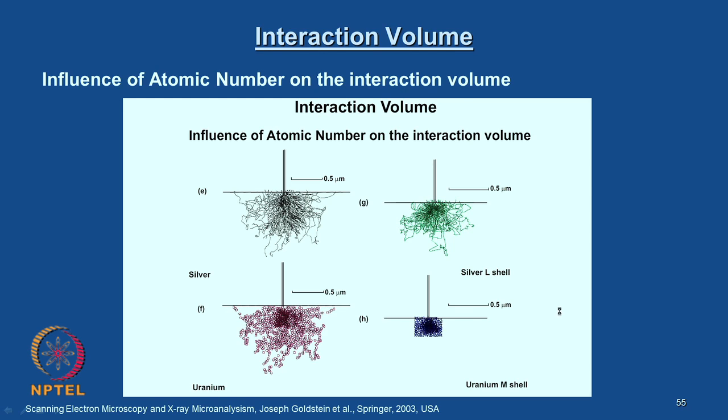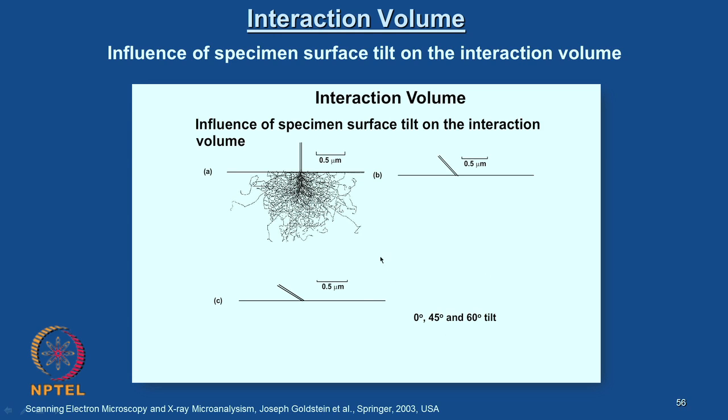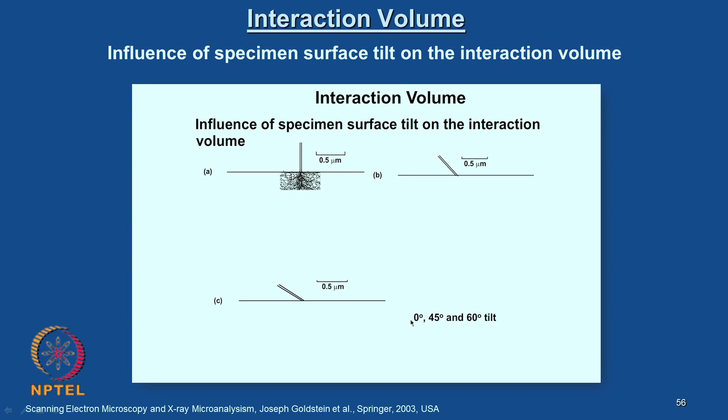It is not just atomic number — there is also an influence of specimen surface tilt on the interaction volume. In SEM operation, the specimen is tilted to the required angle in order to collect the appropriate signals in large quantity. The specimen tilt will have some influence on the interaction volume, and hence the output — whether it is secondary electrons or backscattered electrons — which eventually decides image quality and resolution. The simulation shown here is for 0-degree tilt, 45-degree tilt, and 60-degree tilt. A higher tilting angle also slightly reduces the interaction volume.